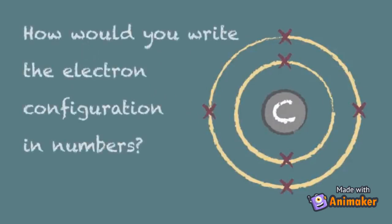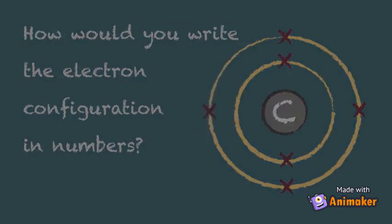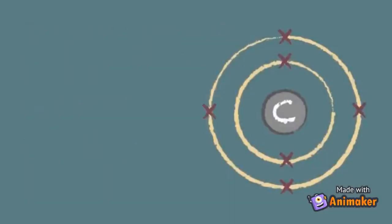Now, how would you write the electron configuration in numbers for this atom? Pause the video again or rewind if you need to have a think about this. The answer is that it would be written 2.4.